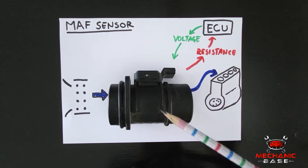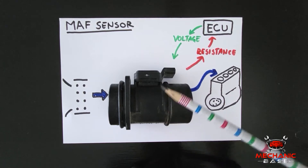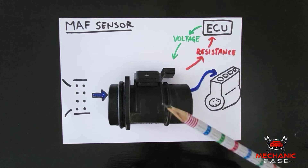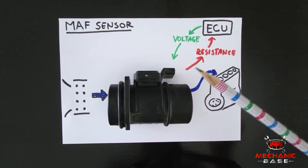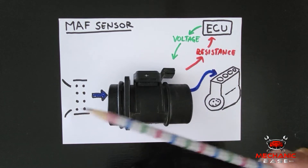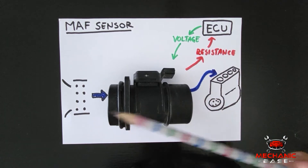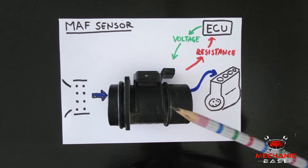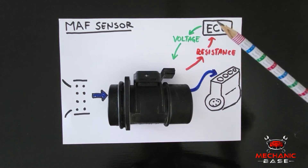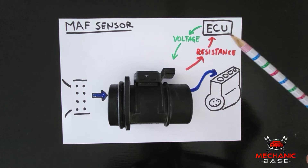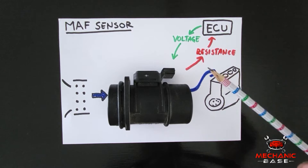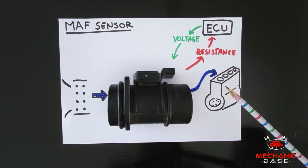Inside the sensor, there is a thin metal wire. The ECU sends a current to this wire, which heats it up and causes it to generate certain electrical resistance. But as the air passes around this heated wire, it cools it down and lowers the resistance. The differences in these values are monitored by the ECU, which uses this data to assess the airflow and consequently adjust the fuel injection.